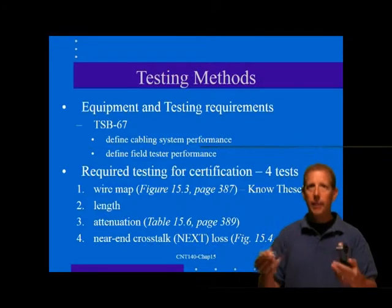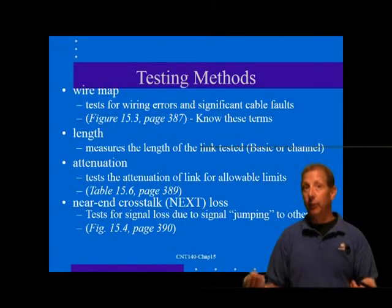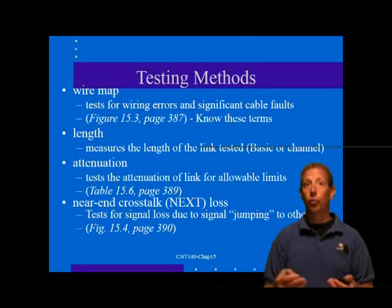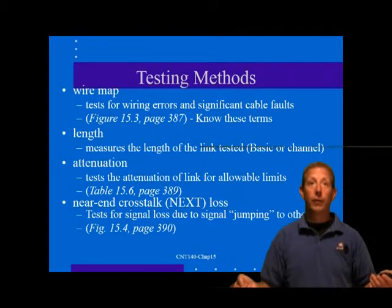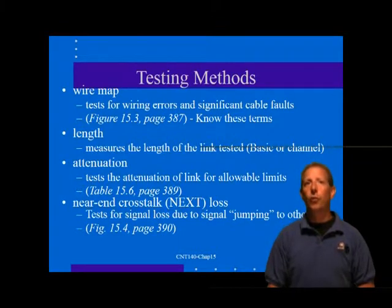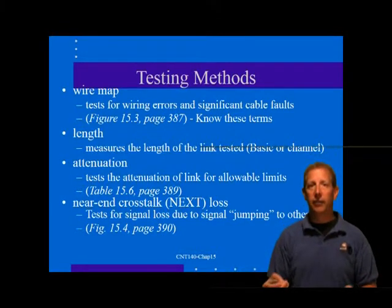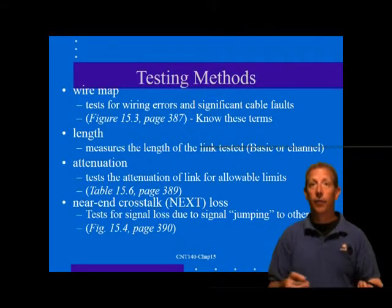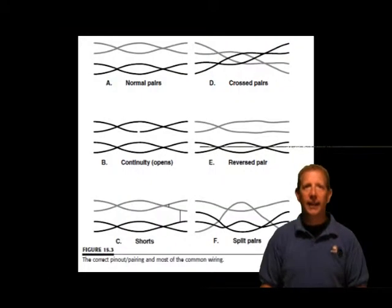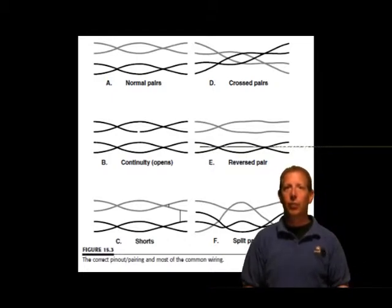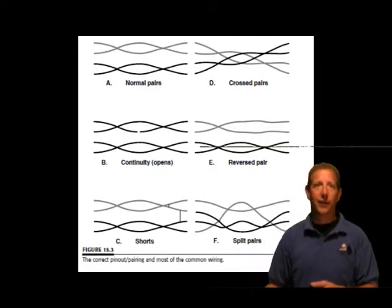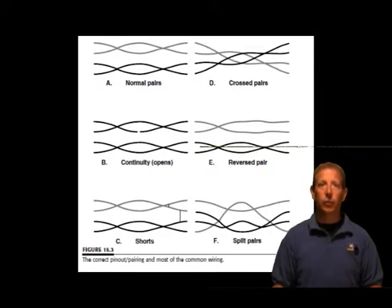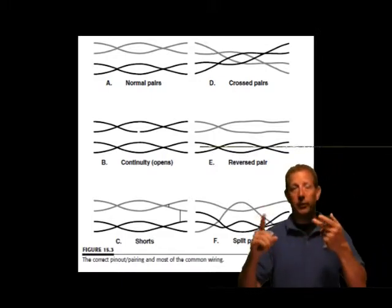The Wire Map. The wire map test checks for wiring errors and significant cable faults such as shorts or opens. It is a good idea to check the reel of cable for shorts or opens before installation, as it will be very hard to prove that a defect was not caused during installation. The wire map test will check for continuity, shorts, cross pairs, reverse pairs, and split pairs. In the standard 568C wiring scheme, the wires are paired 1 and 2, 3 and 6, 4 and 5, and 7 and 8.